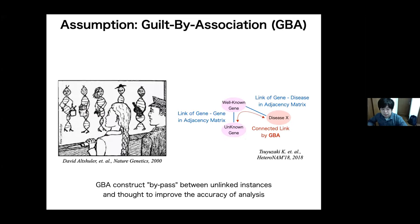If we combine heterogeneous biological data, the data analysis can be improved. This is based on an assumption called Guilt-by-Association or GBA. In GBA, if an unknown gene and a well-known gene have a high similarity, and if a well-known gene is related to a disease, an unknown gene may also be related to this disease. In this way, this assumption constructs bypass between unlinked entities and can improve the accuracy of our analysis.